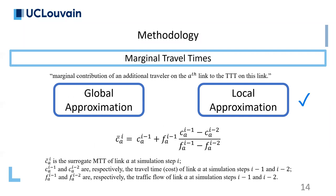The most important point of our algorithm is the calculation of marginal travel times, because in order to shift from user equilibrium to system optimal, we should replace the travel times by marginal travel times. Generally, we have two approaches to calculate the marginal travel times: the global approximation and the local approximation. The global approximation has more accuracy but is computationally expensive, while the local approximation is less accurate but not computationally expensive. As we want to work on medium and large scale networks, we use the local approximation, and here is the formulation of the surrogate model of the marginal travel times.